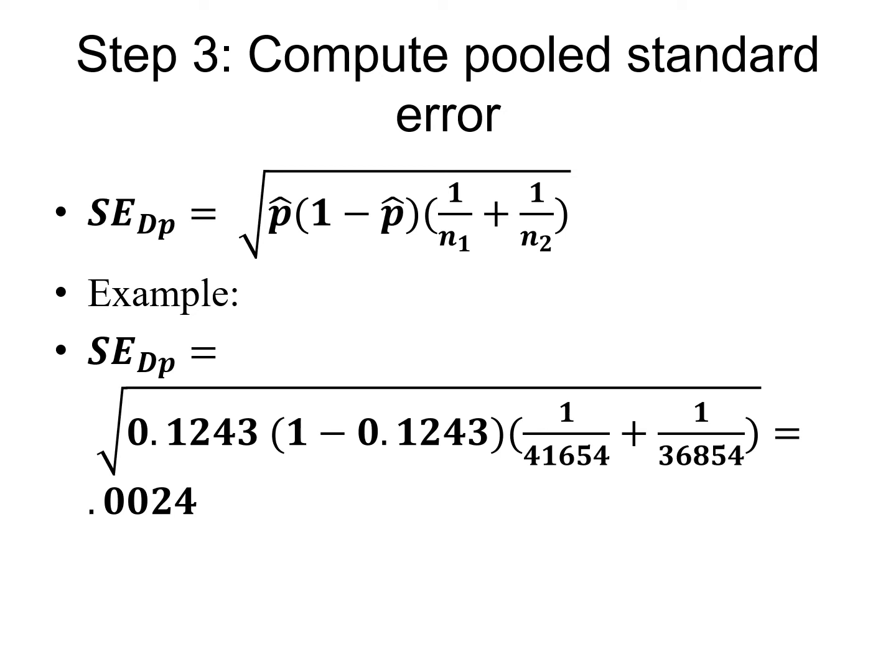So here we're doing something similar, but we're using the pooled proportion to do the calculation. So the standard error when we're looking at a difference in proportion, that's what SE_Dp stands for, is the square root of that pooled proportion times 1 minus the pooled proportion, and then we multiply that by 1 over n1 plus 1 over n2. So this is really capturing the fact that we have these two different samples that may be different sizes. This is providing the appropriate weighting. So in this case, if you did it by hand, you would calculate the 0.1243 times 1 minus 0.1243, and you'd multiply that by 1 over the first sample that is for add A, there were 41,654 views, plus 1 over 36,854 views. So this comes to 0.0024.